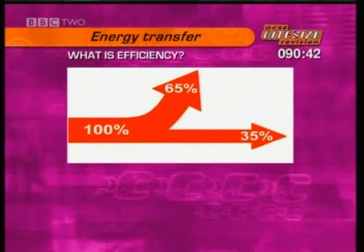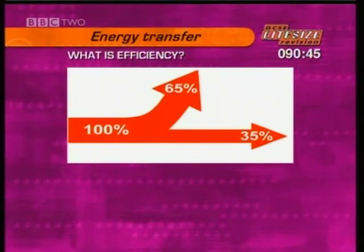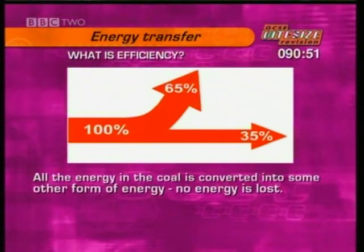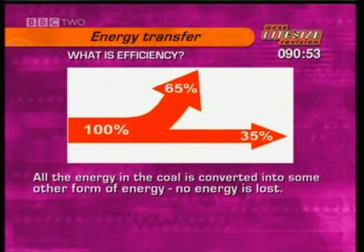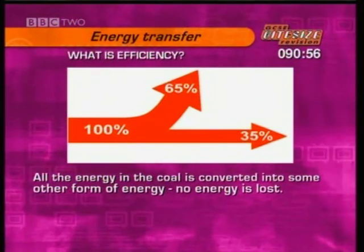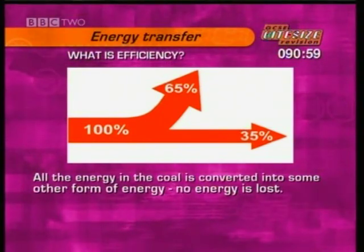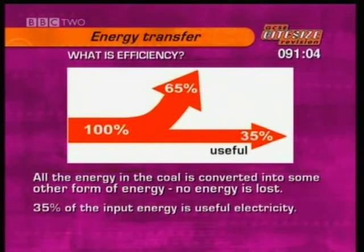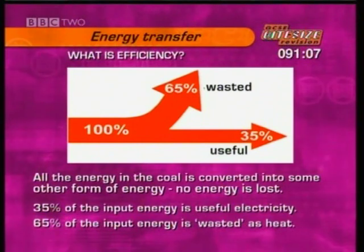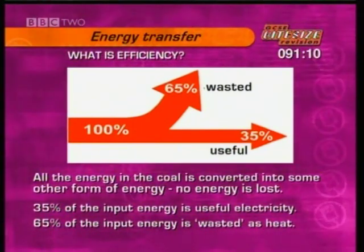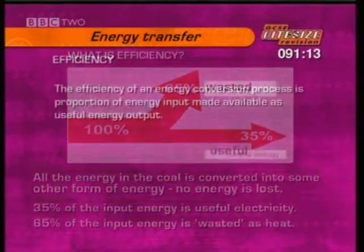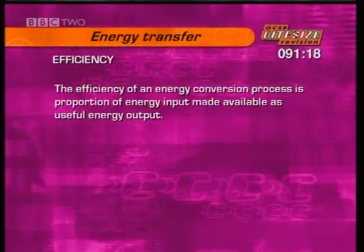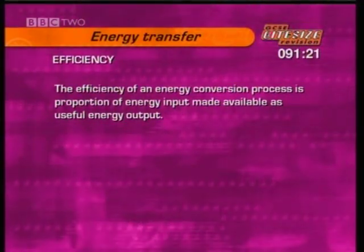Drax is 35% efficient — what does that mean? All the energy stored in the coal is converted into some other form of energy; no energy is lost. It's just that by the time the coal has been burned, the water heated, the turbines and generators turned, only 35% of the original energy is transferred to the consumer as useful electricity. 65% is wasted as heat that goes into the surroundings. So the efficiency of an energy conversion process is the proportion of energy input that is made available as useful energy output.